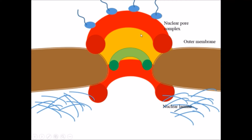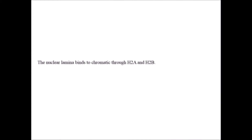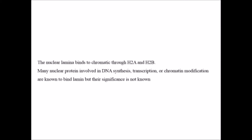This is the detailed structure of the nuclear pore complex — it looks very complex. Here I have shown the half portion of the nuclear complex. The nuclear lamins are associated with the nuclear membrane with the help of lamin B receptor and MRG. Many nuclear proteins involved in DNA synthesis, transcription, or chromatin modifications are known to bind with lamins, though the exact significance of this binding is still unknown.